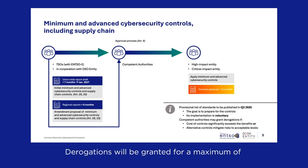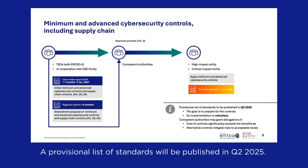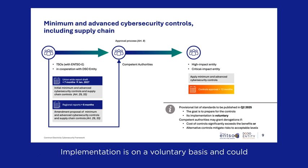Derogations will be granted for a maximum of three years, with the possibility of renewal. A provisional list of standards will be published in Q2 2025. Implementation is on a voluntary basis and could prepare entities for the minimum and advanced controls.